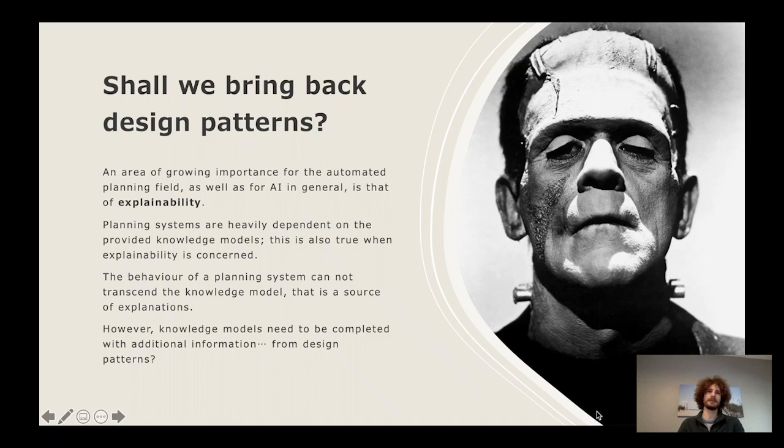What we are advocating here is, shall we bring design patterns back? First of all, of course, for the knowledge engineering area, but we're also suggesting that emphasis on explainability can be very important. Explainability is the area of AI where you try to explain the decisions and solutions provided by an automated system. If we narrow down explainability to the planning field, planning systems are heavily dependent on knowledge models, and the knowledge models can provide a very valuable source of information for explaining the behavior. But the domain models and problem models are not enough - they need to be complemented with additional information that can come under the form of design patterns.